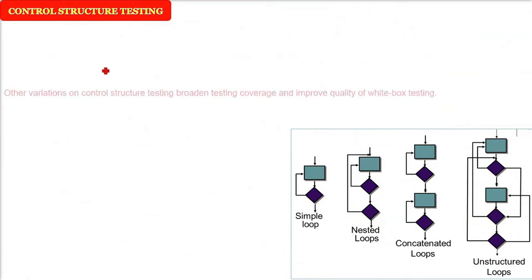Control structure testing. Control structure is about conditions, branching, yes and no, logic, zero, one, etc. So white box testing is improved. The quality of white box testing improves if we use various variations of control structure testing. We have different kinds of testing like condition testing, and condition testing exercises the logical conditions in a program.